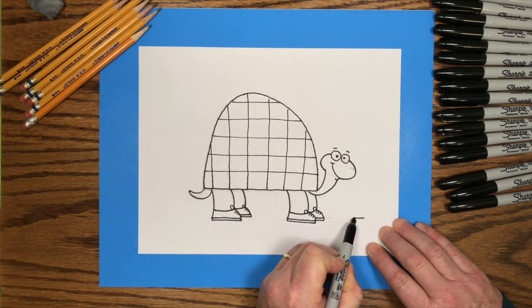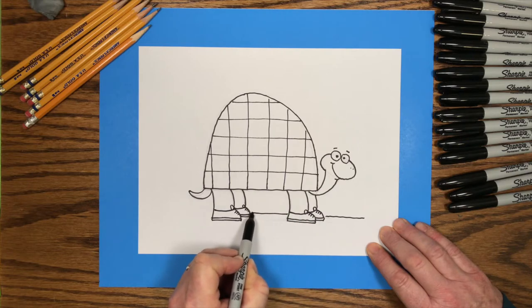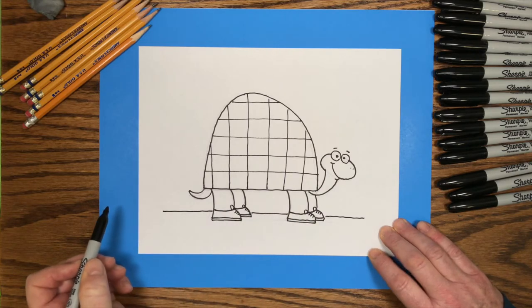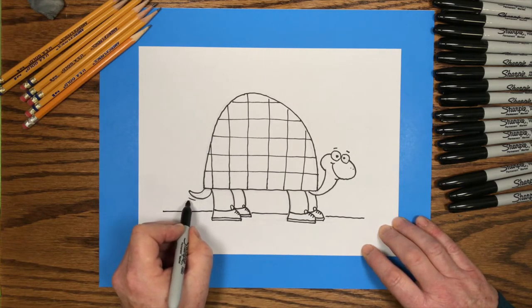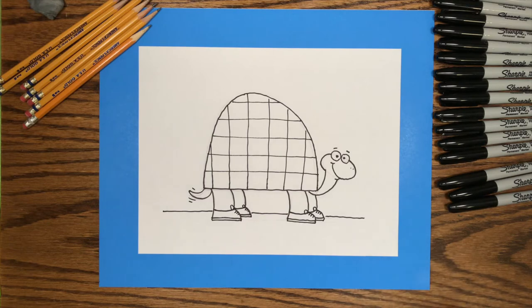And then I'll draw a line across the bottom to show where the turtle's standing. It can be the ground or the grass. And I'll even add a few more details around his tail. These are called motion marks. Drawing those lines around the tail makes his tail look like it's wagging.